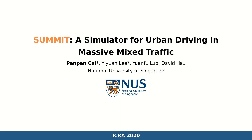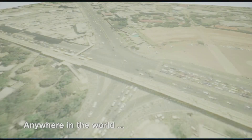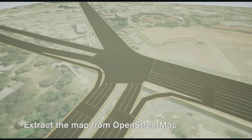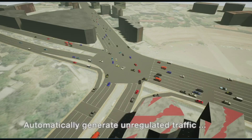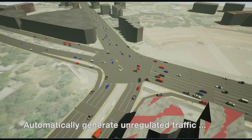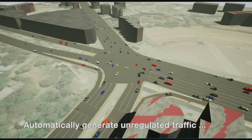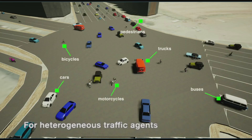Our vision is to facilitate the development, training, and testing of powerful crowd-driving algorithms. The SUMMIT simulator takes online map data from anywhere in the world, supported by OpenStreetMap, and automatically generates unregulated traffic occupied with heterogeneous agents.